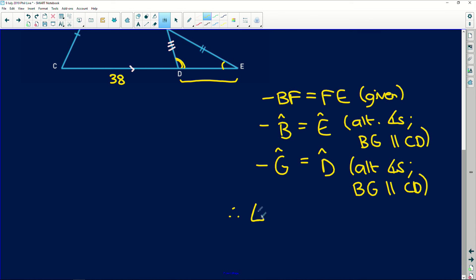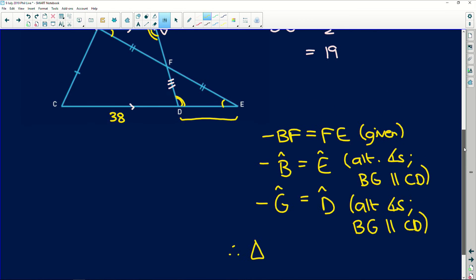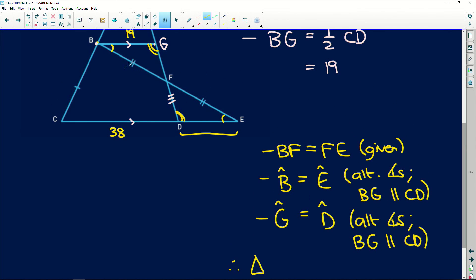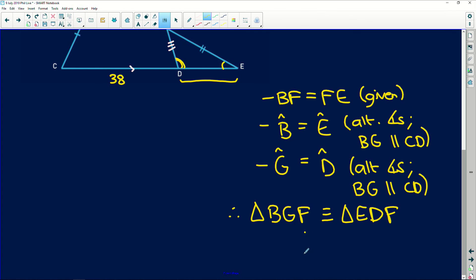So therefore, triangle, remember, label them so the corresponding stuff corresponds with each other when you label them. So BGF. The angle that's equal to B is angle E. We've got congruent triangles here. So angle E. Angle equal to G is D. EDF. And why? Because we've got side, angle, angle.